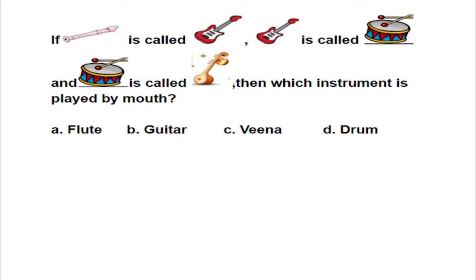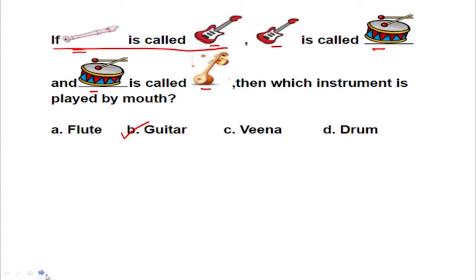Let us now look at the next question. If flute is called guitar, guitar is called drum, and drum is called veena, then which instrument is played by the mouth? Guitar you play with hand, drums you play with hand, veena also you play with the hand. But you play the flute with the mouth. But here flute is called guitar — it is like a code or a secret language. The correct answer for this question is option B, guitar.